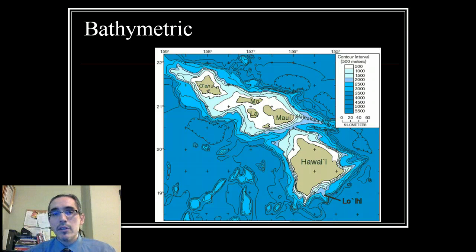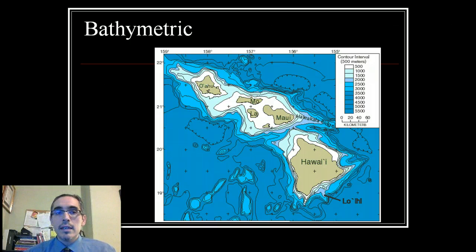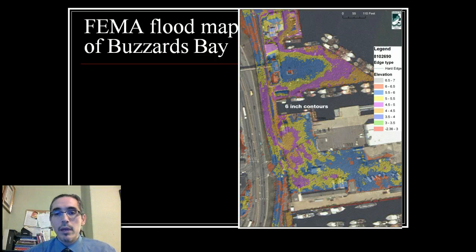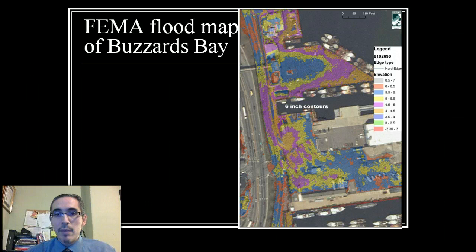A bathymetric map is another type of topographic map, except that the lines here are showing depth below the water surface rather than elevation above sea level. So bathymetric is essentially topographic but for underwater. Maps that show elevation have really evolved, and we oftentimes show elevation differences in other ways — for example, using hypsometric tinting, where instead of contour lines, color-coded areas indicate how elevation changes across different regions.